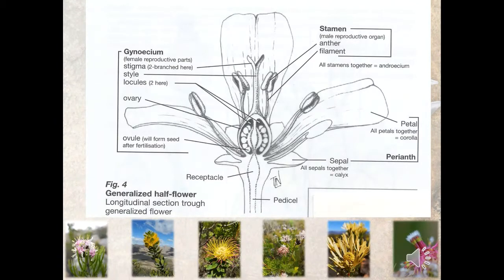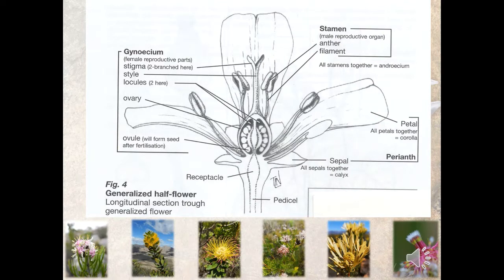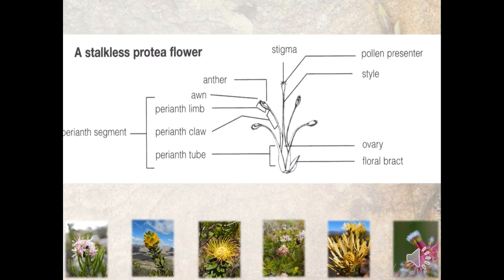If we look at a photo of just a normal flower, you can see the outer structures are the sepal and the petal, and together those two structures are called the perianth. Then you have the stamens, which is the male part of the flower, and the female part of the flower, which is the stigma, style, and ovary. A Proteaceae flower looks quite different.